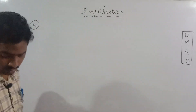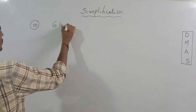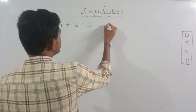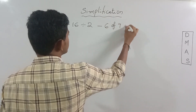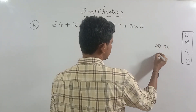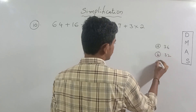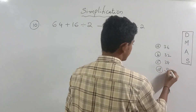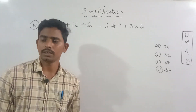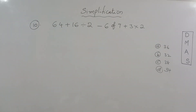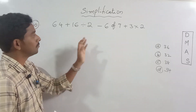Okay, 10th one: 64 plus 16 is divided by 2, minus 6 of 7, plus 3 into 2. So the options are 36, 32, 38, and finally 34. Half means it is another form of the multiplication — into symbol.